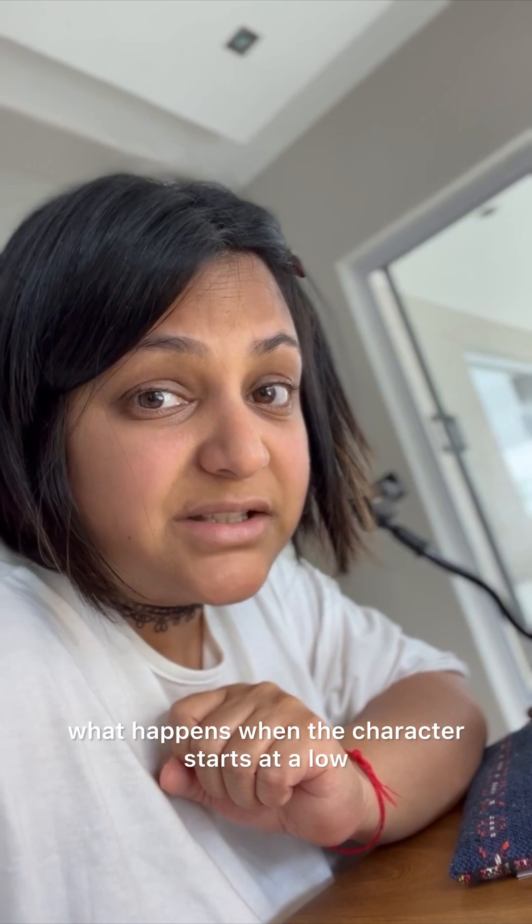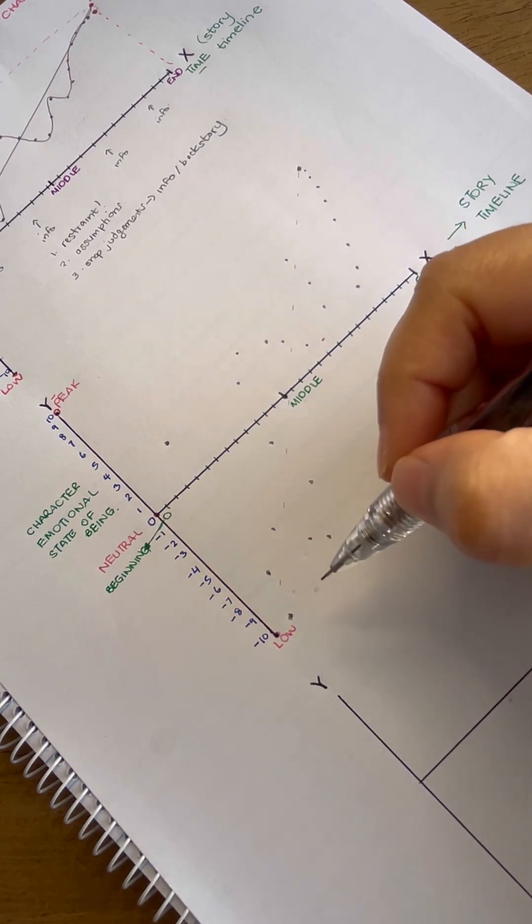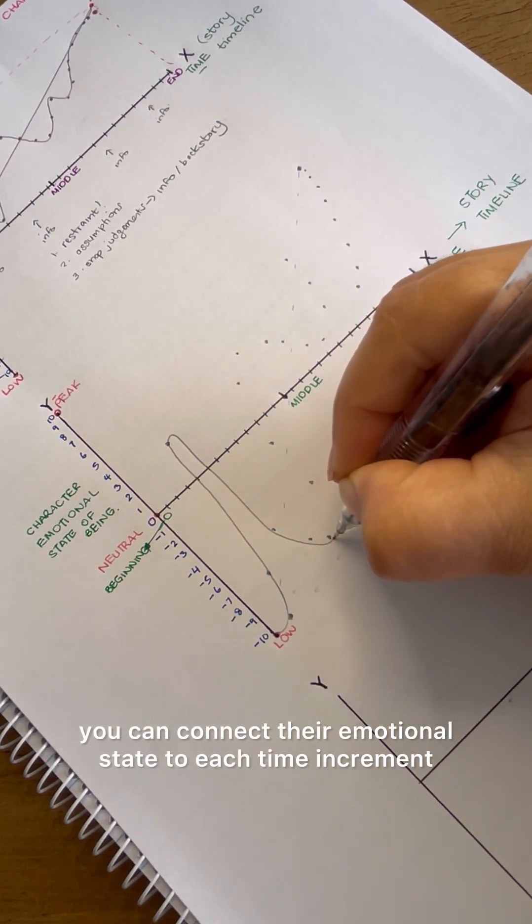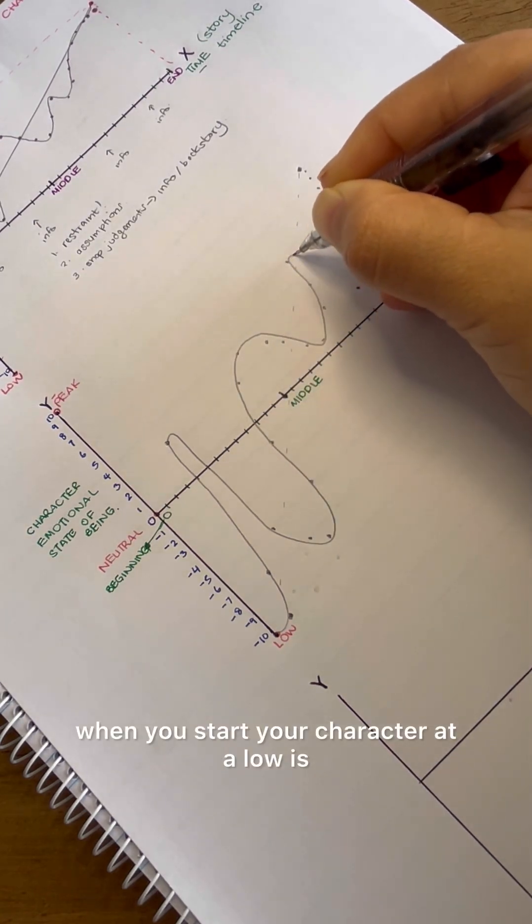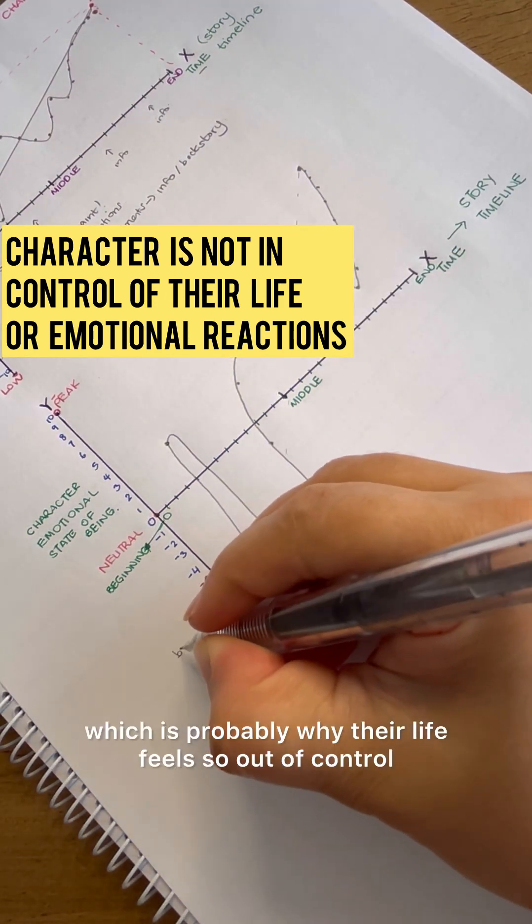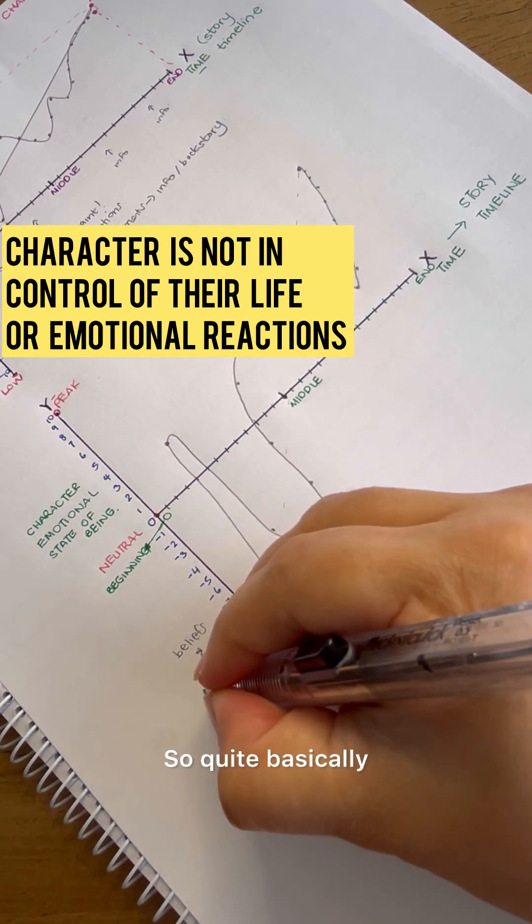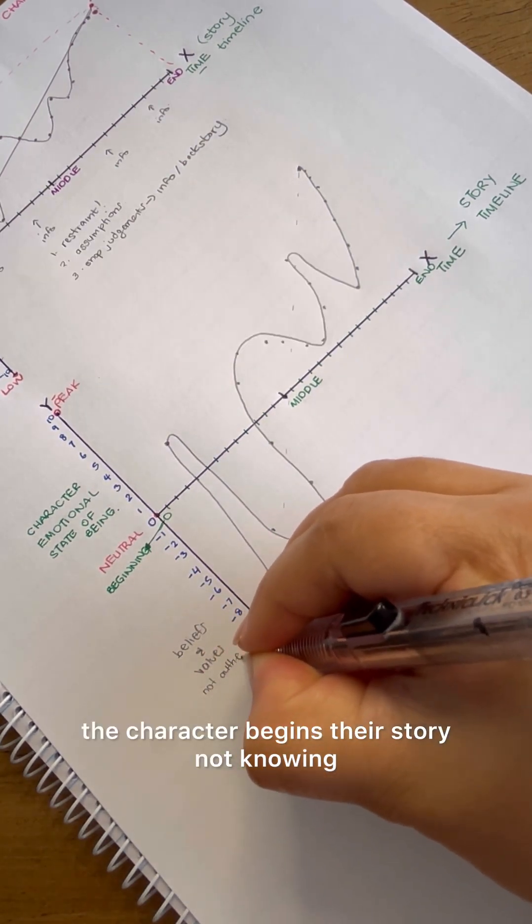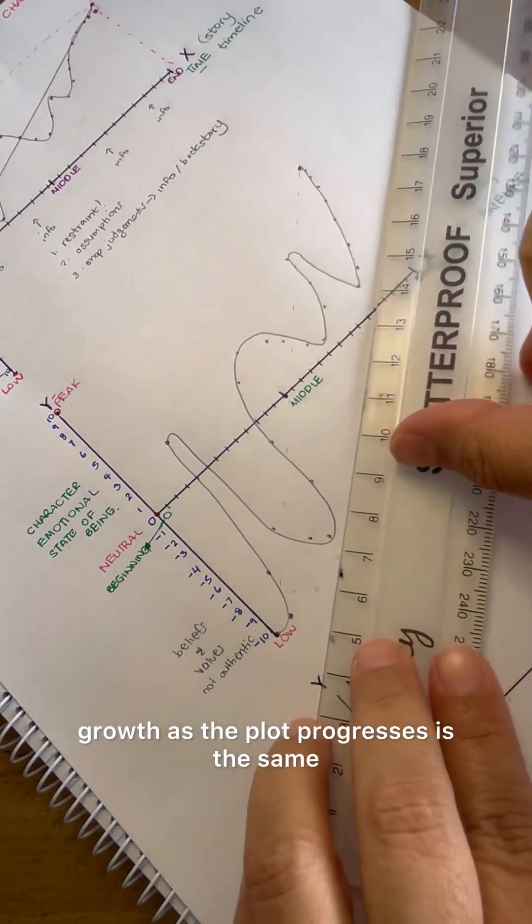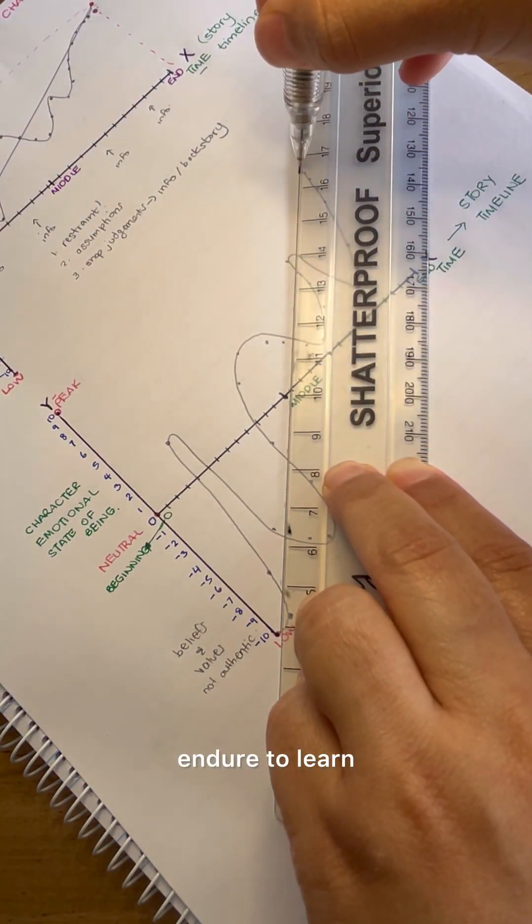Now, we're going to consider what happens when the character starts at a low. In this scenario, when the story's action begins, our character is at their absolute low. When the character starts in a negative position, as you move along the story timeline, you can connect their emotional state to each time increment. The important thing to remember when you start your character at a low is that this emotional state is attached to a set of beliefs and values that they don't even resonate with, which is probably why their life feels so out of control. They're doing things that don't feel authentic, but they believe will get them further in life. So quite basically, the character begins their story not knowing a damn thing about who they are and what they want.